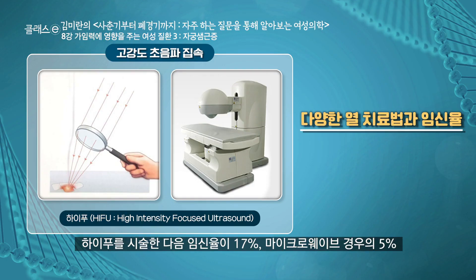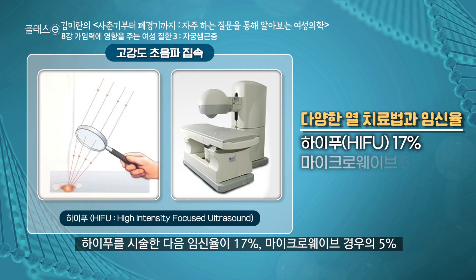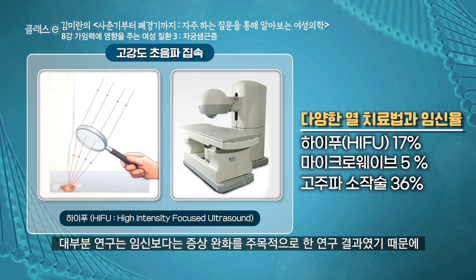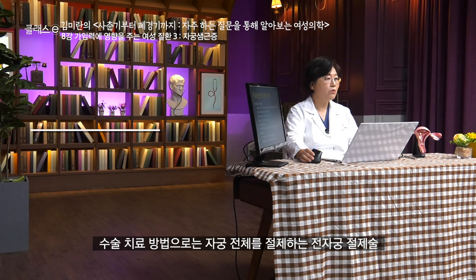다양한 방법의 열 치료법입니다. 하이푸를 시술한 다음 임신율이 약 17%, 마이크로웨이브의 경우에 약 5%, 고주파 소작술의 경우에는 약 36%의 임신율이 보고되었습니다. 이 대부분의 연구는 임신보다는 증상 완화를 주목적으로 한 연구 결과였기 때문에 임신율이 높지는 않습니다. 향후에 임신을 원하는 자궁 선근증 환자의 경우에 열 치료법은 아직 연구 결과가 미흡하므로 주의가 필요합니다.